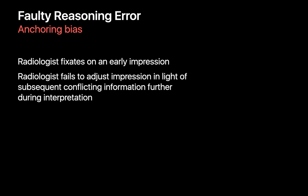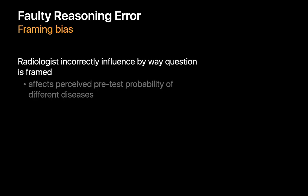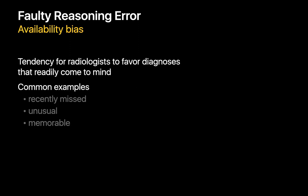Sometimes it might be due to anchoring bias. Like dogs with a bone, sometimes we latch on to an impression early in the interpretation process and are hesitant to let it go, even as conflicting information arises. Sometimes faulty reasoning errors occur because of framing bias, where how a case is presented affects our perceptions of what is more or less likely. Do you interpret subtle interstitial lung opacities slightly differently when they're coming from an ILD clinic than when they're coming from the ED? Availability bias can also predispose us to making faulty reasoning errors.